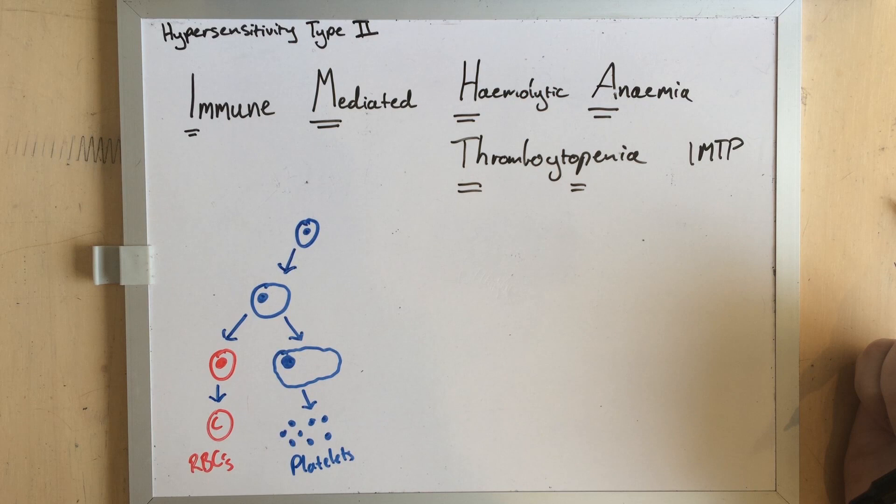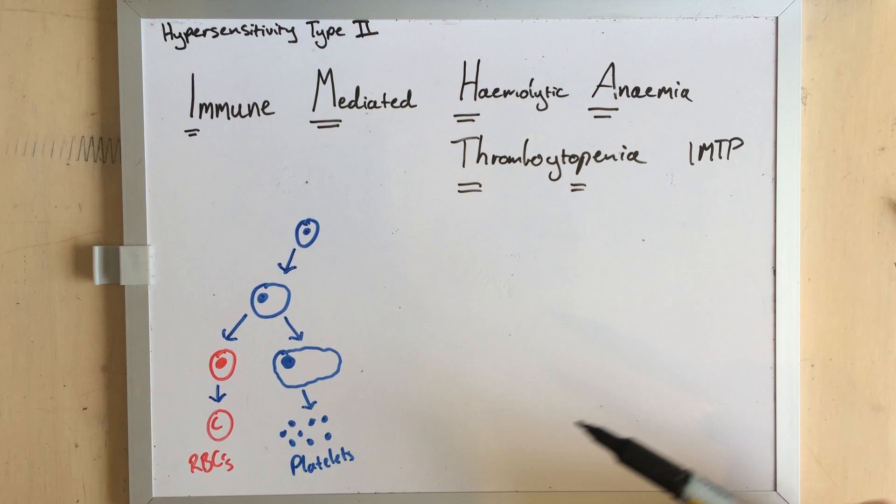Penia just means you haven't got enough of those cells. It's not as common as IMHA because megakaryocytes are not as inclined to soak up different and exciting antigens as the red blood cells are, but you can also get both of them occurring together because the cell types are closely related.